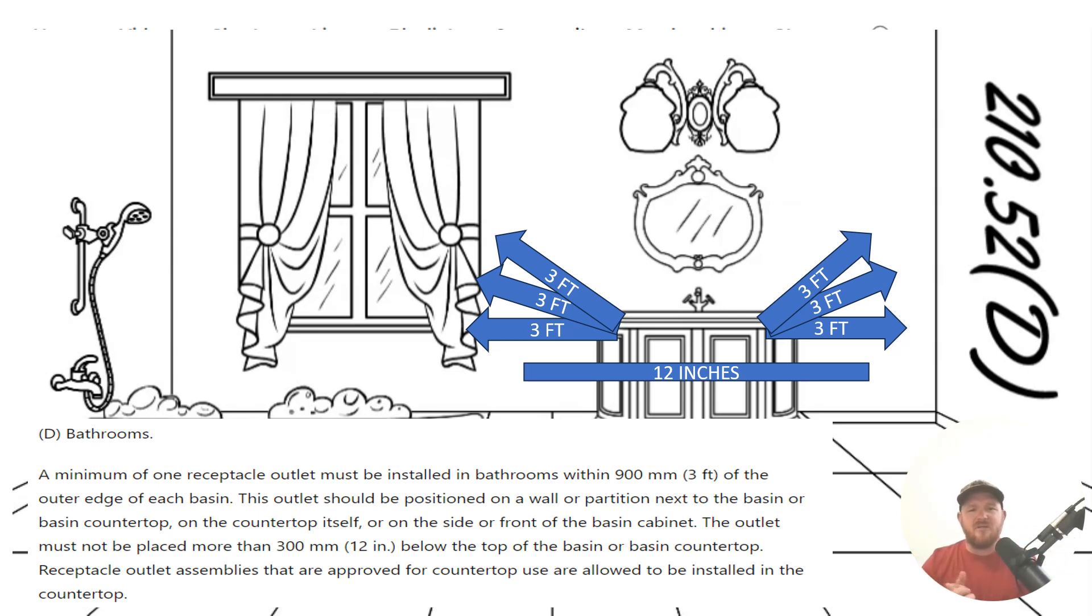It says receptacle outlet assemblies that are approved for countertop use are allowed to be physically installed in the countertop, like a pop-up or something like that. Now you have to be careful with this last part here. There are two different major types of listings for these receptacles that are in like the pop-up receptacles. There are some that are listed for work surfaces and there are some that are listed for countertops.